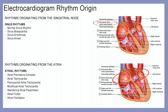Rhythms originating in the sinoatrial node — the SA node — are our sinus rhythms. These include normal sinus rhythm, sinus bradycardia, sinus arrhythmias, and sinus arrest.